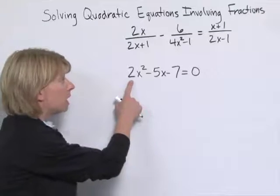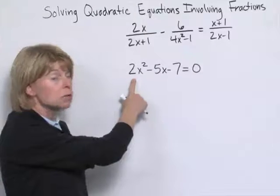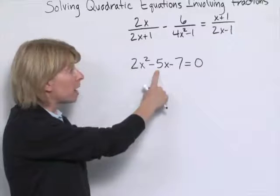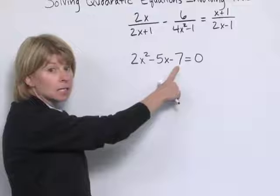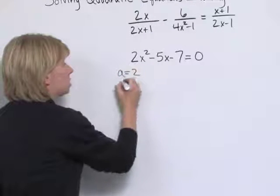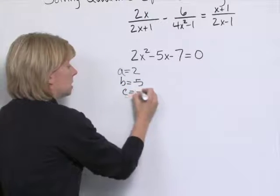Remember the value of a in the formula is the coefficient of x squared, or 2. The value of b is the middle coefficient, or negative 5, the coefficient of x. And the value of c is the constant, in this case negative 7. So a is 2, b is negative 5, and c is negative 7.